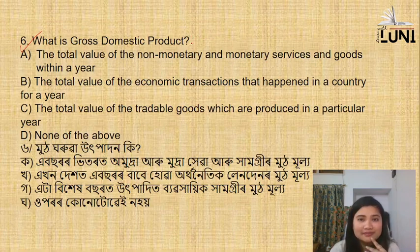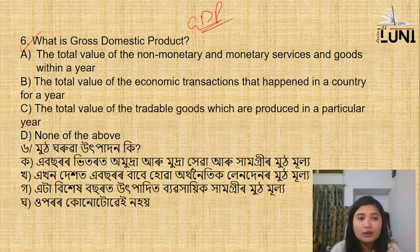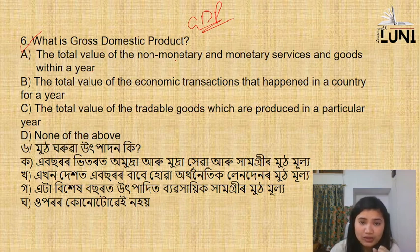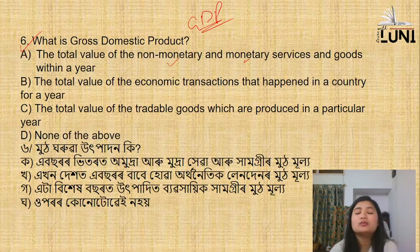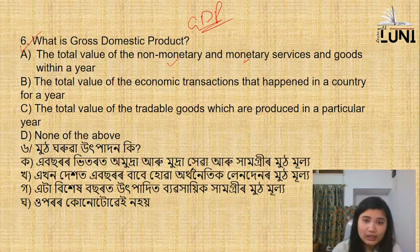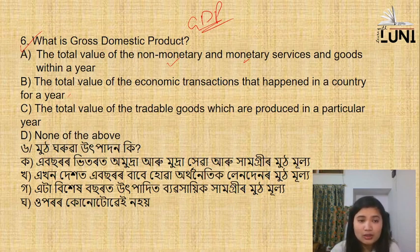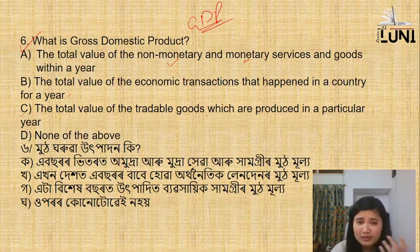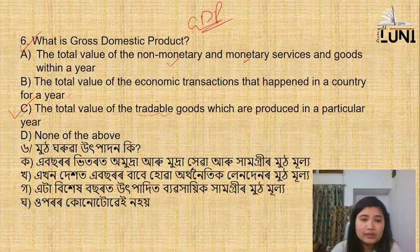Next question: what is gross domestic product? GDP is defined by which of the following: the total value of non-monetary and monetary services and goods within a year; the total value of economic transactions that happened in a country for a year; or the total value of tradable goods which are produced in a particular year. The answer is C - the total value of tradable goods which are produced in a particular year.